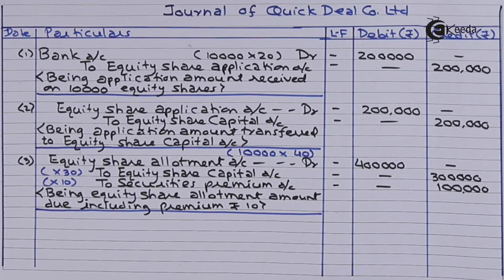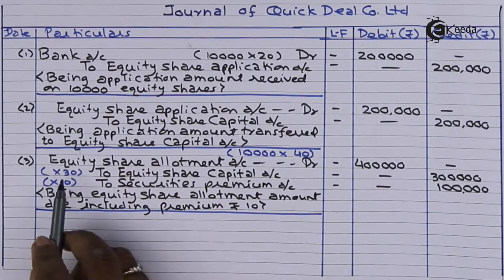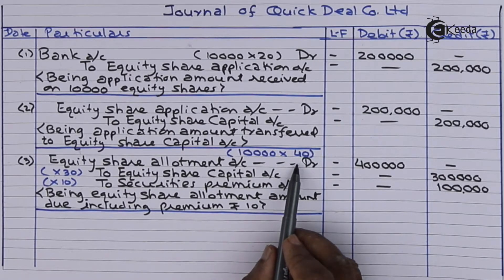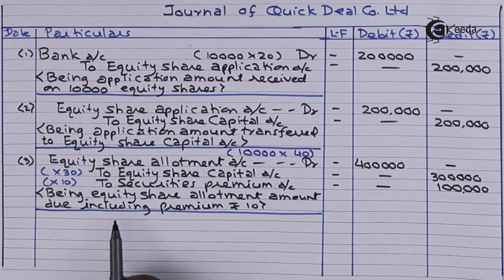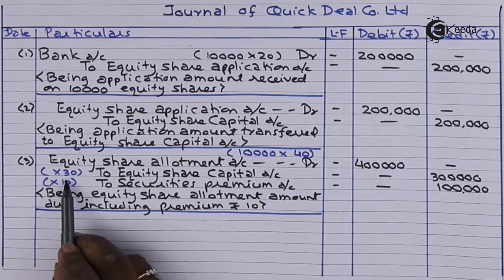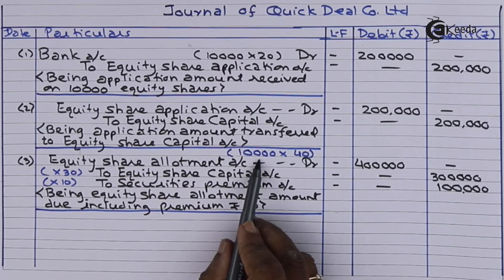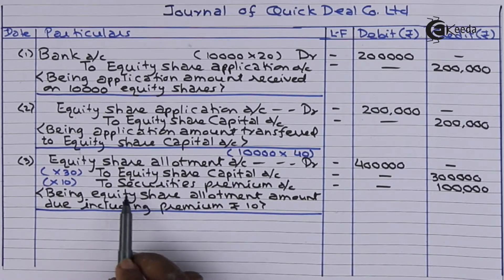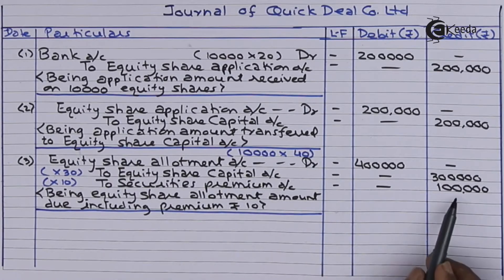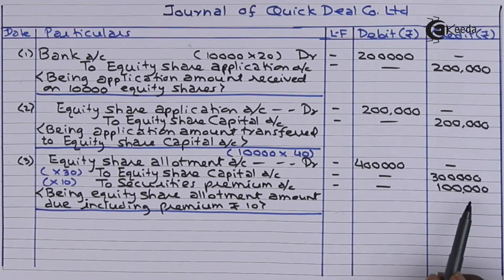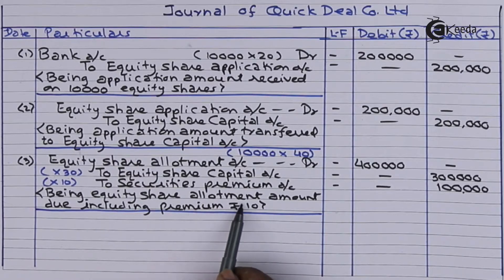For demanding the allotment amount, the entry recorded is: equity share allotment account debit — on 10,000 shares at rupees 40 per share, amount is rupees 4 lakhs — to equity share capital account: 10,000 shares multiplied by rupees 30 towards capital, rupees 3 lakhs; and to securities premium account: 10,000 shares at rupees 10 per share, rupees 1 lakh. Being equity share allotment amount due including premium of rupees 10.